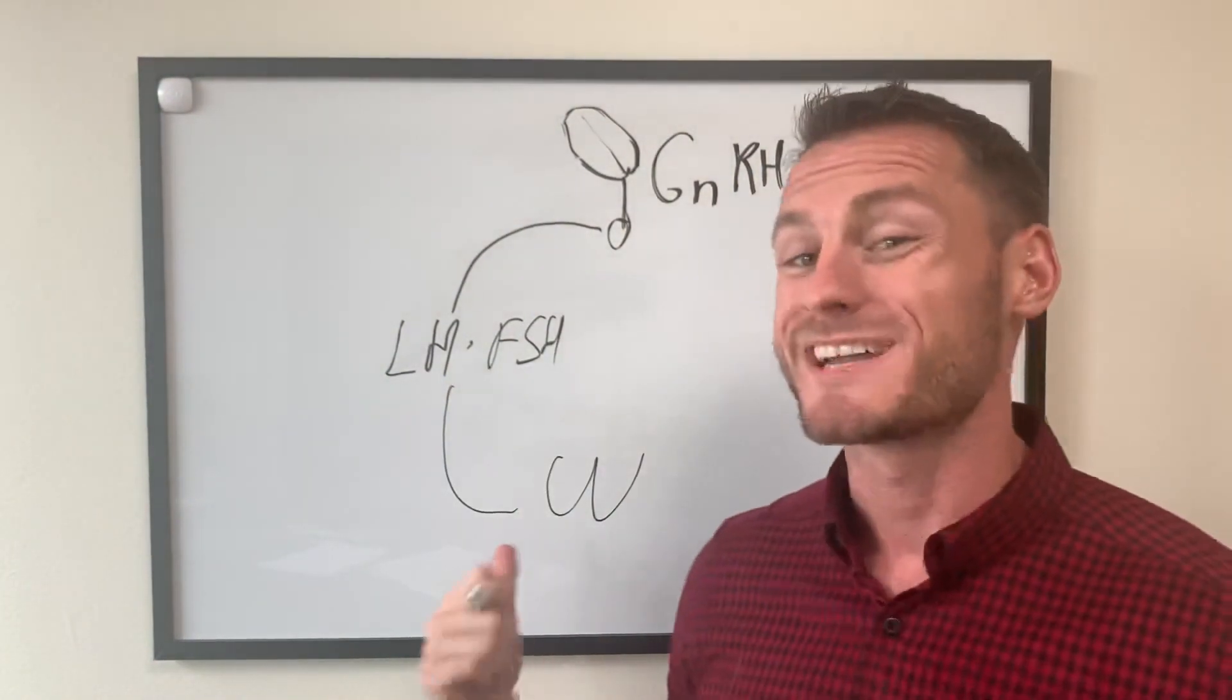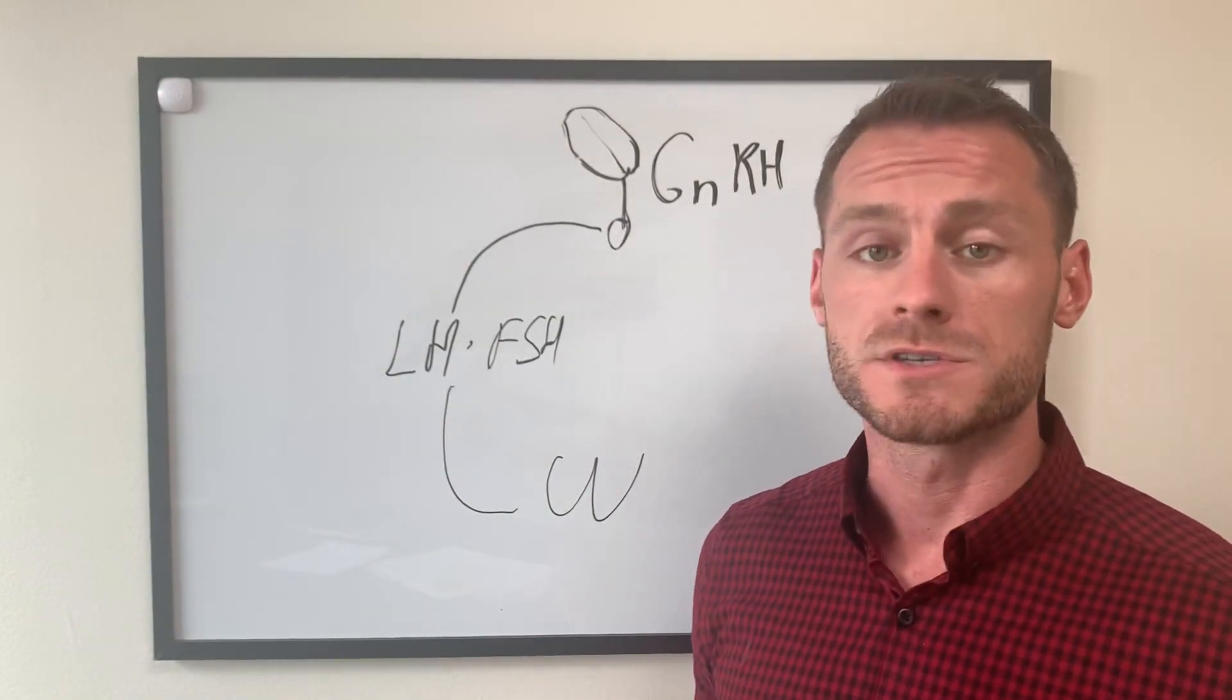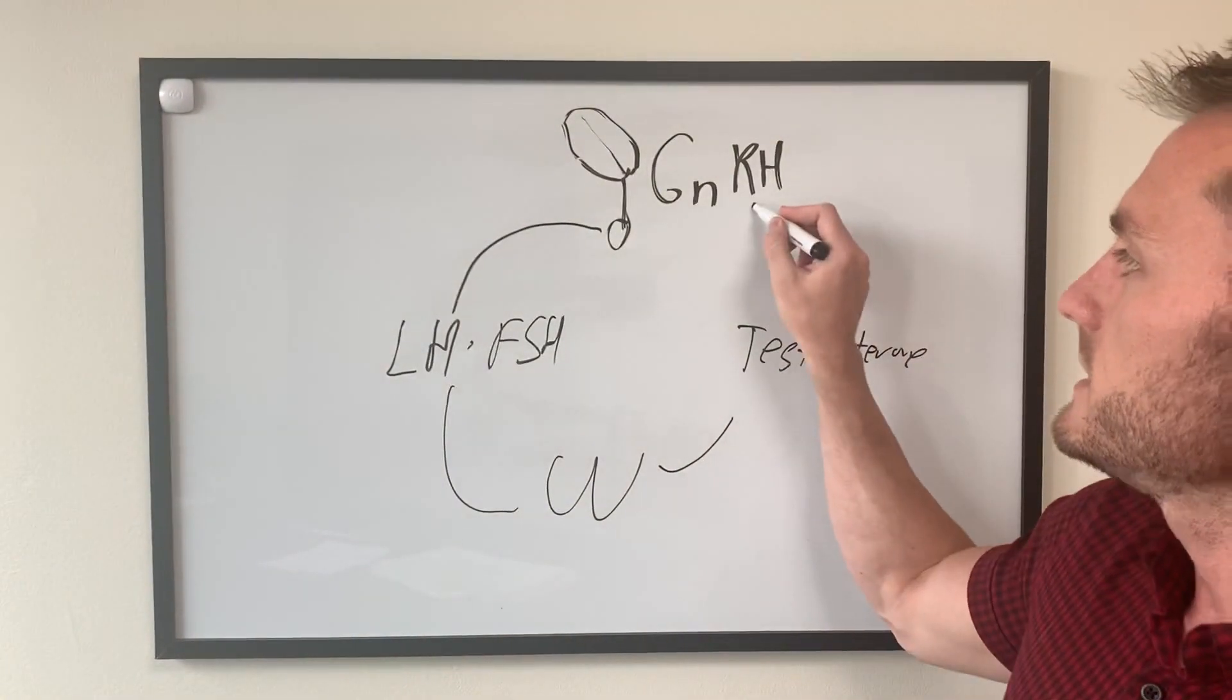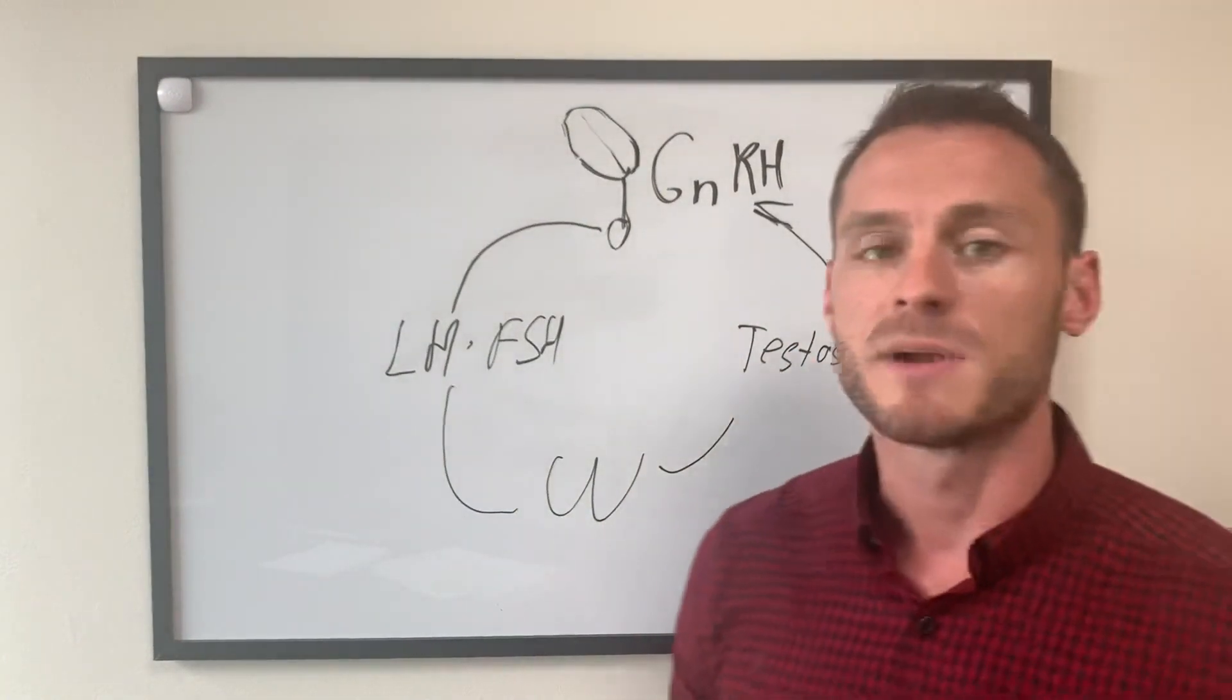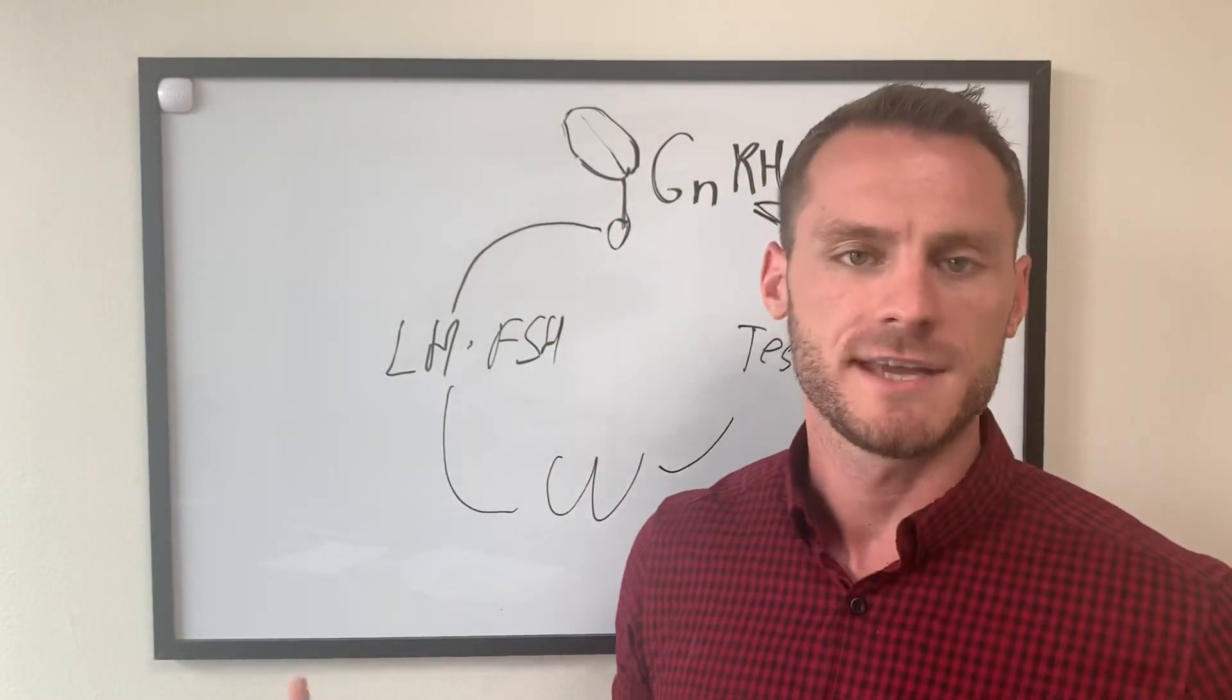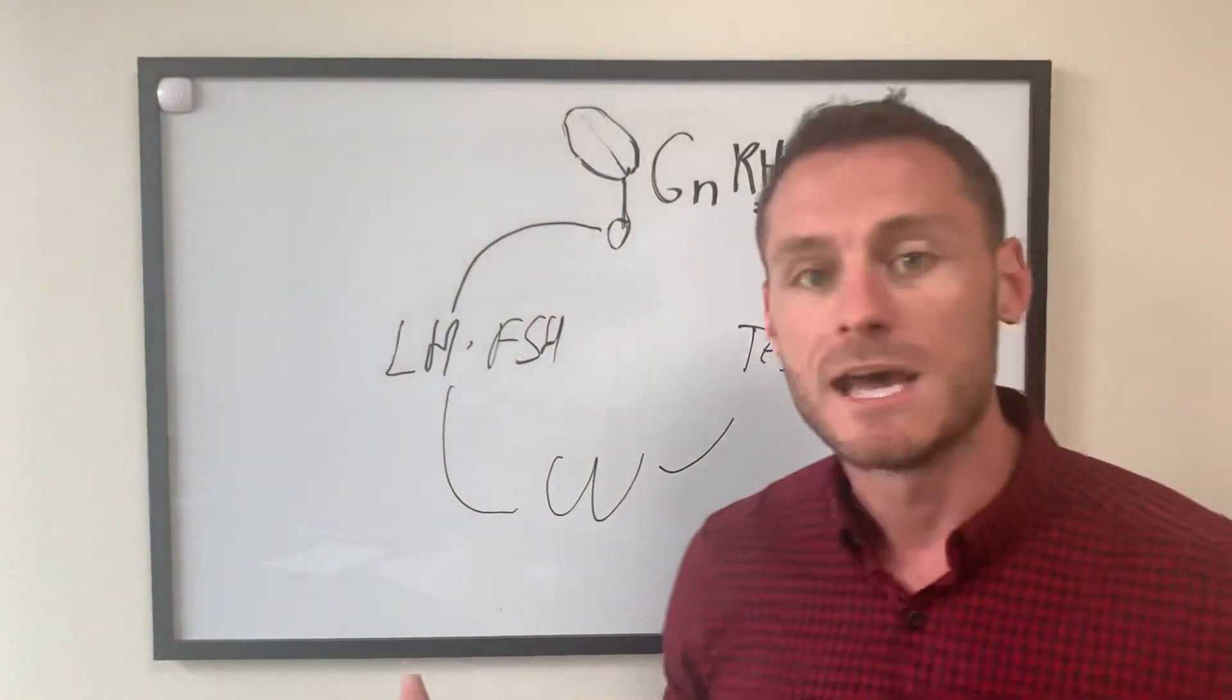Those go down to our testicles as guys and then we produce testosterone and we produce sperm. Once our testosterone is released it goes up to the brain and then the brain says okay everyone's happy. So to keep things simple, the brain will ask for 10 testosterone. So it'll send 10 LH down and we get 10 back. Now everyone's happy.